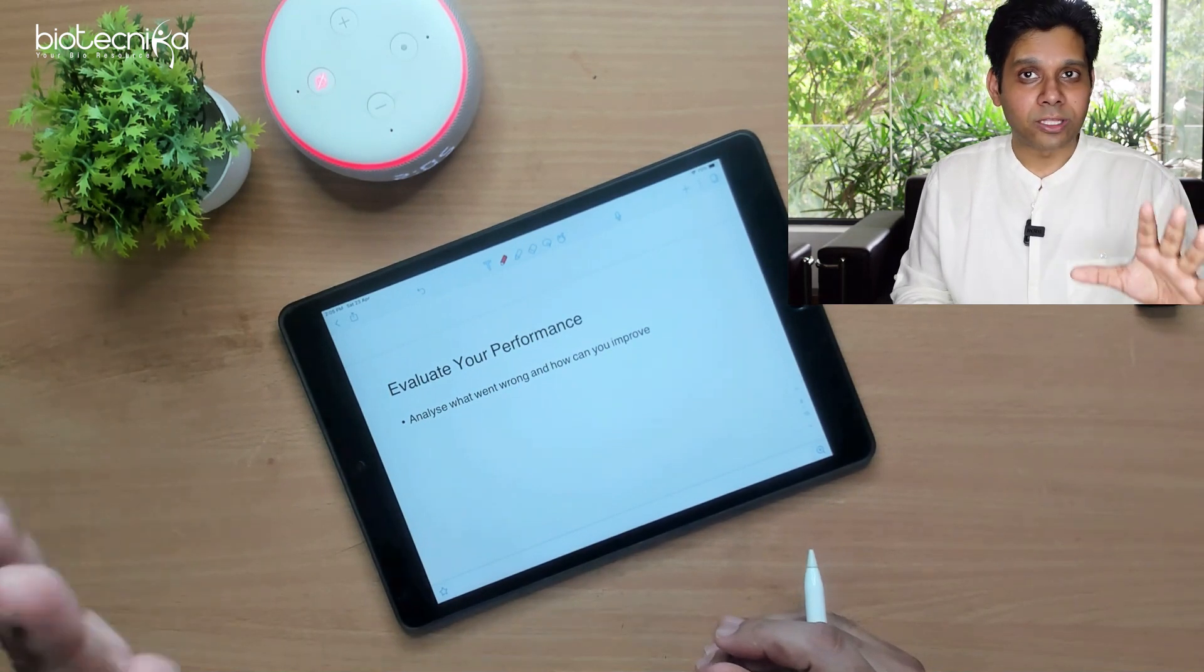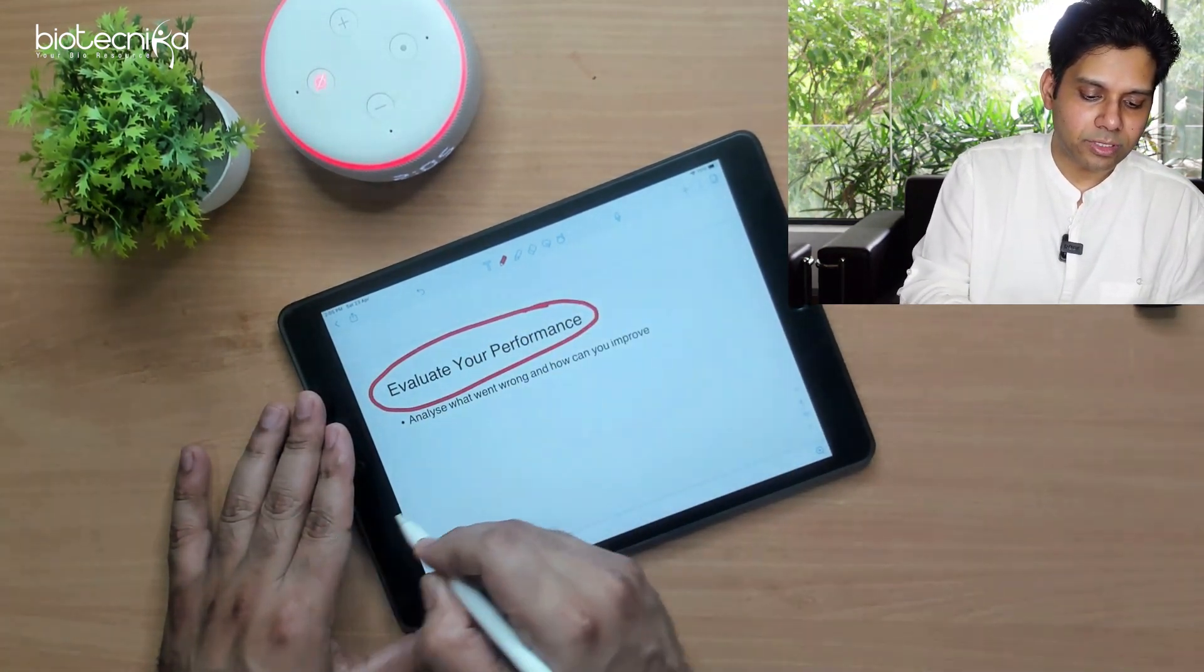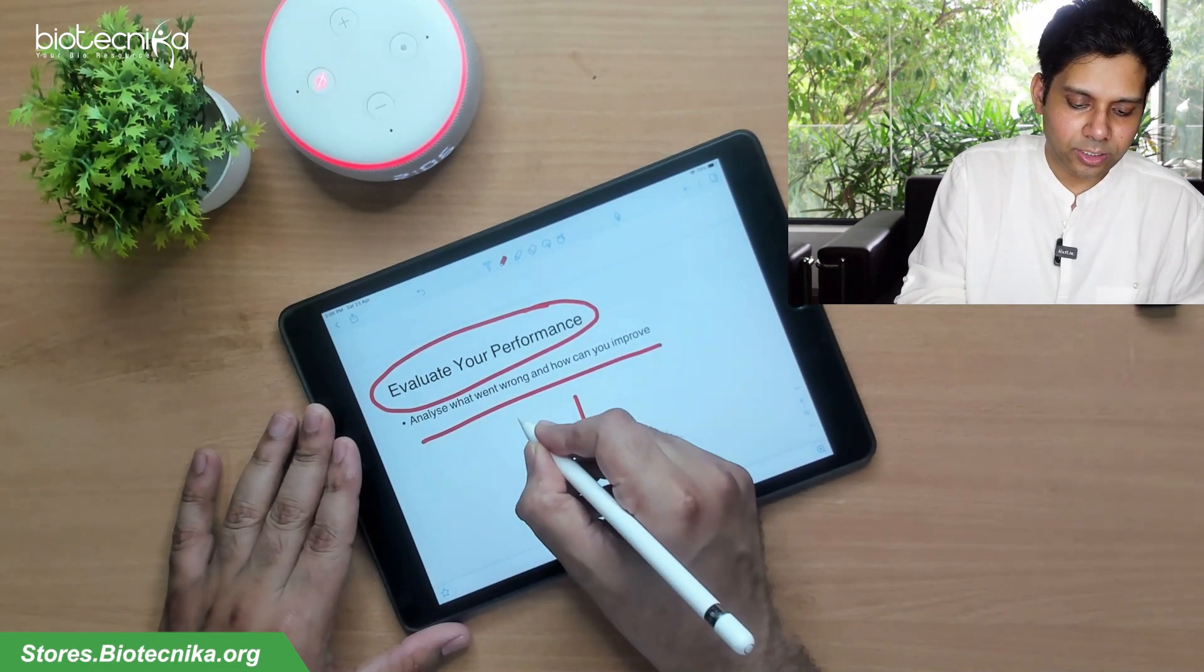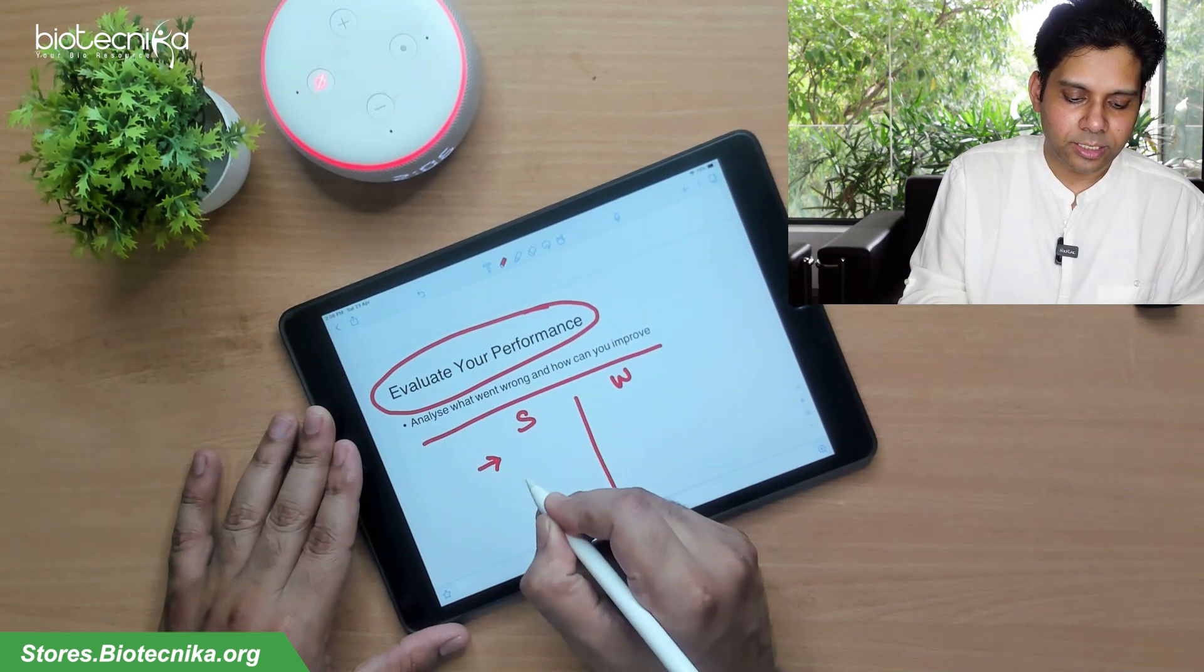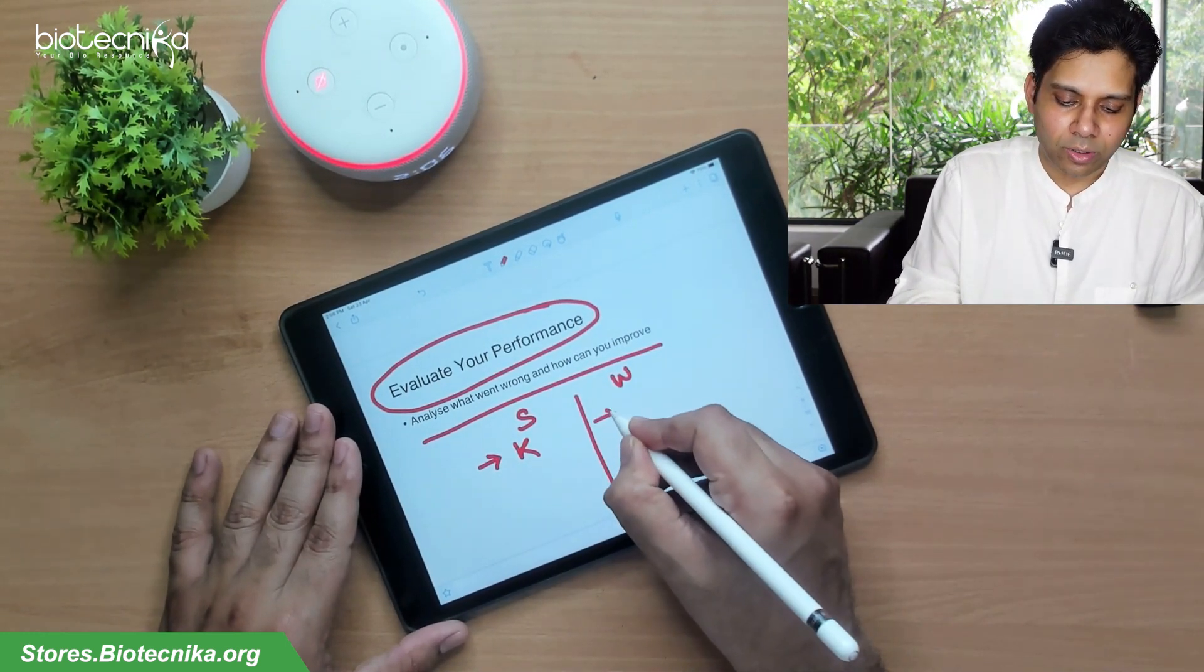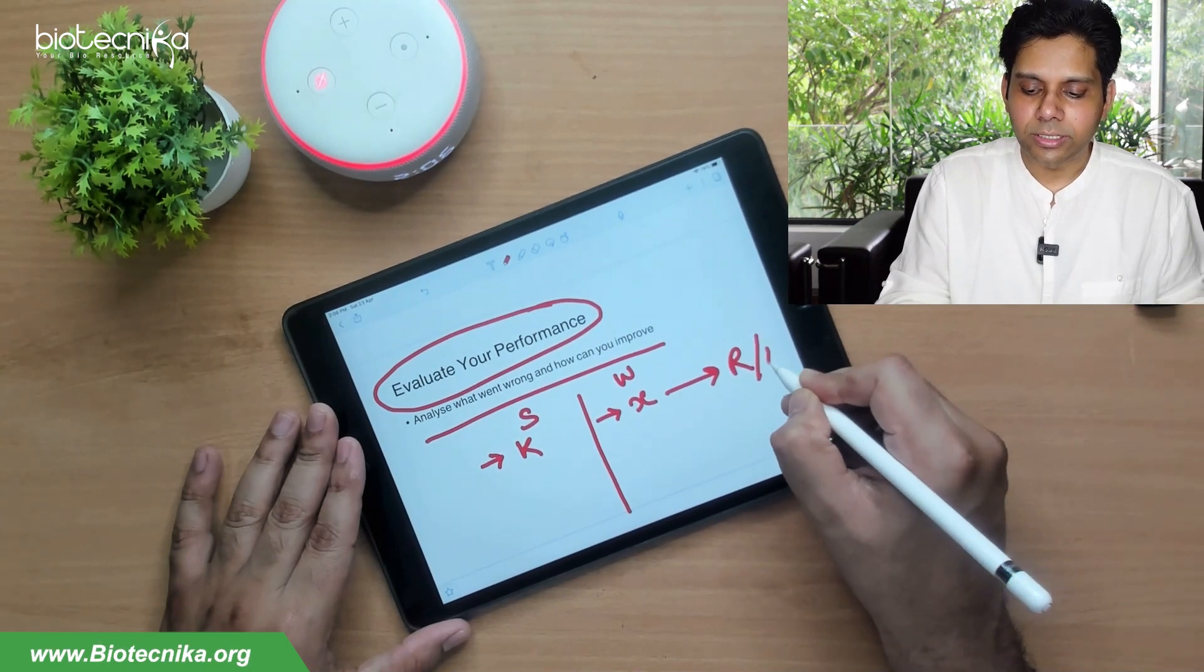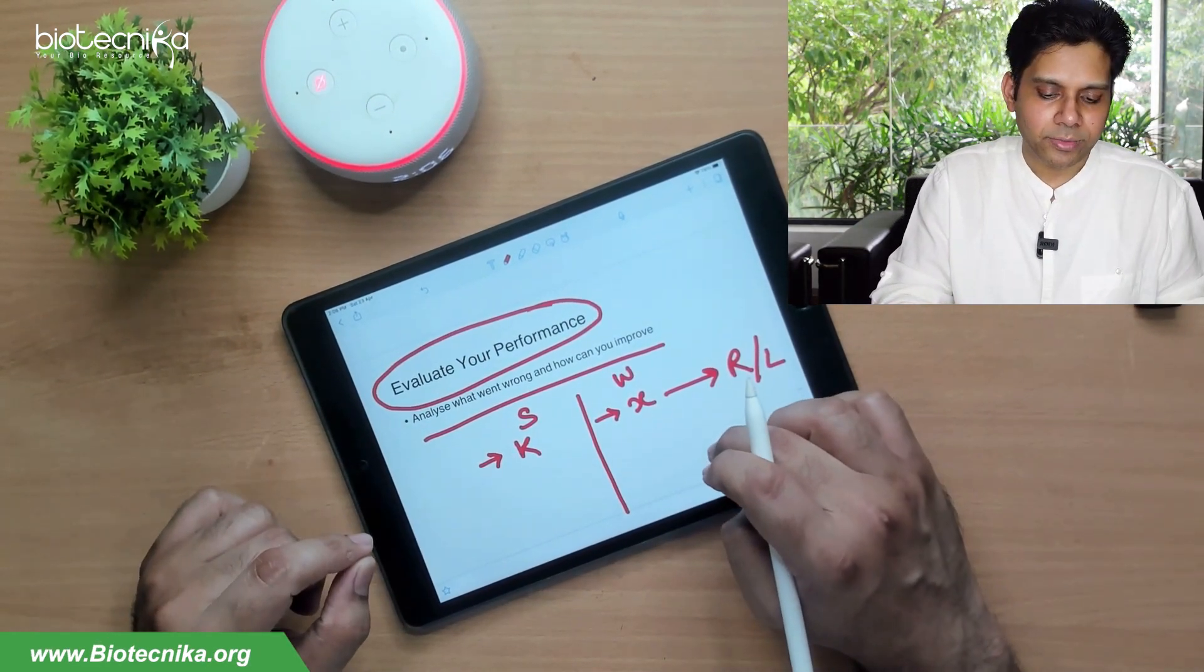Now after doing all this, whenever you are attempting the previous question papers, evaluate your performance. Analyze what went wrong and what went right. While analyzing, you have to do this: strong areas, weak areas. This particular concept K is easy for me. This particular concept X is difficult for me. That means I should go and revise or learn this concept. This is where your evaluation of performance comes into picture.